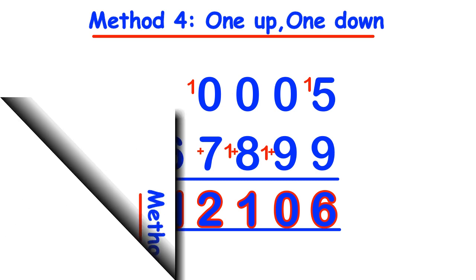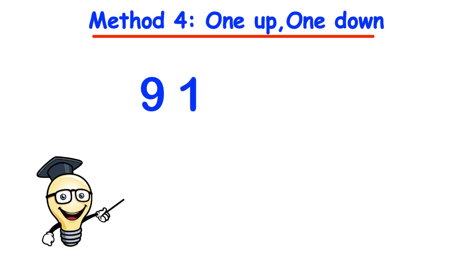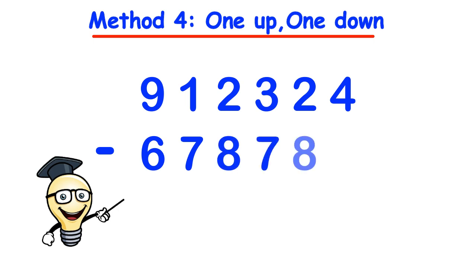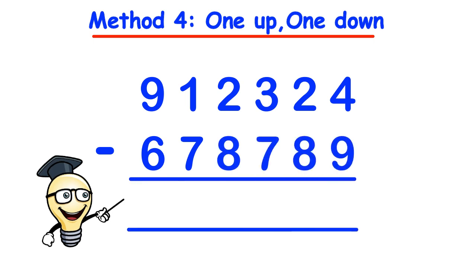Let's take a look at another example. Let's consider 912324 take away 678789. So starting from the right hand side since 4 cannot take away 9 we put 1 up 1 with the 4 that makes 14 and 1 down with the digit in the next column adding that 1 with the 8 that makes 9.